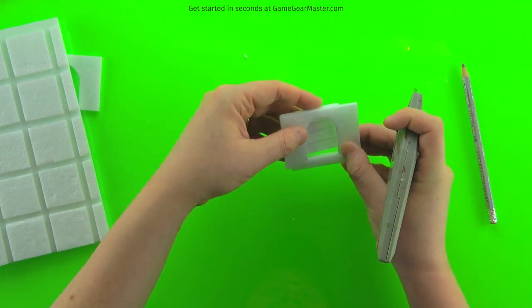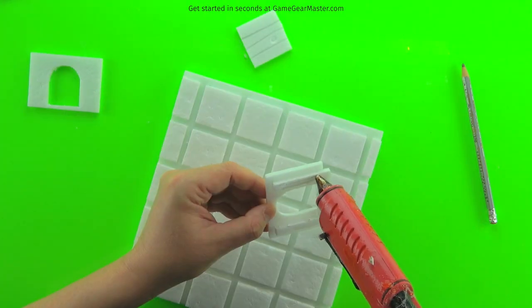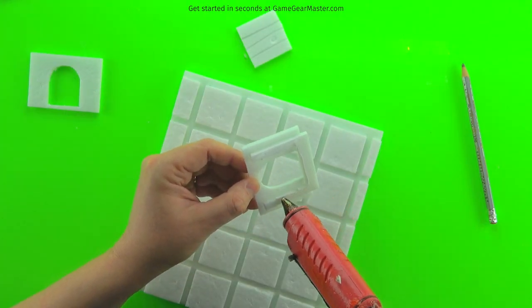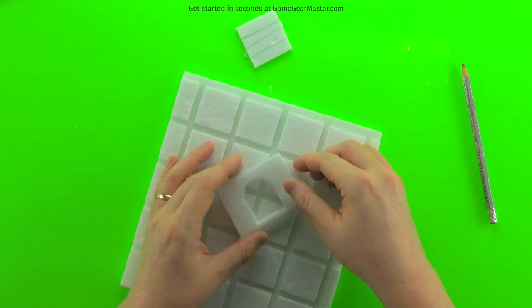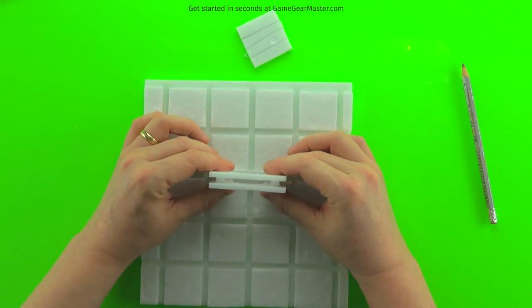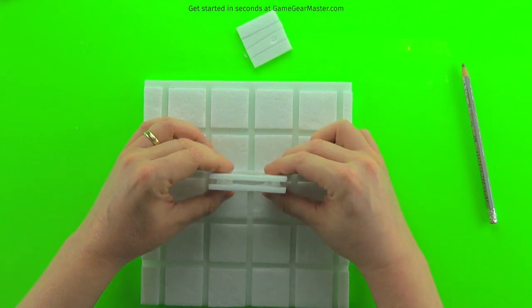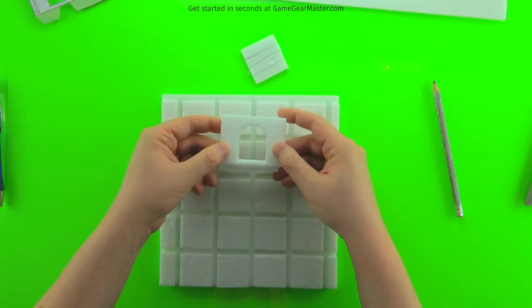And you can also do a little test fit of your door. It looks pretty good. And then it's just adding some hot glue, putting the wall on, making sure it's positioned correctly left to right. And you're done. All set for paint.